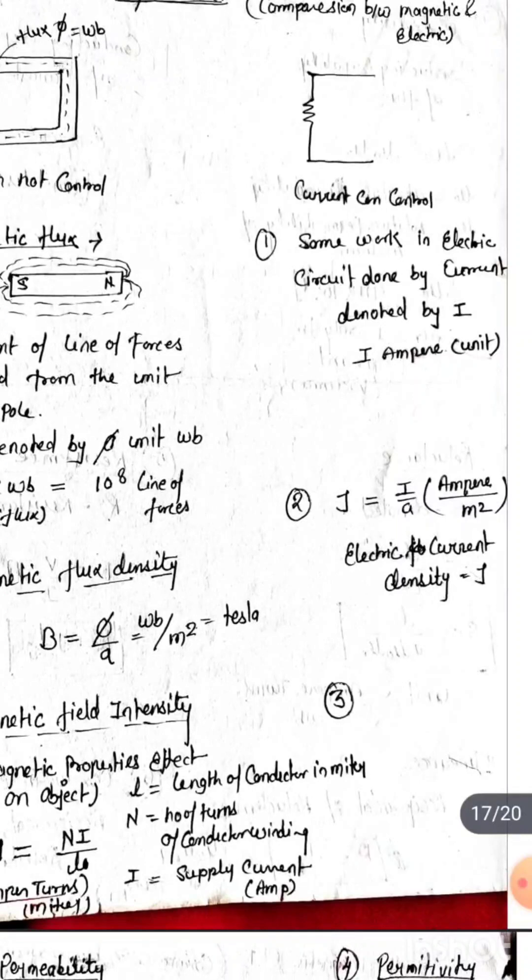In electric circuit there is J, the electric current density. Electric current density is equal to I upon A, in amperes per meter square.